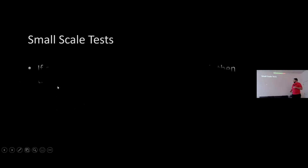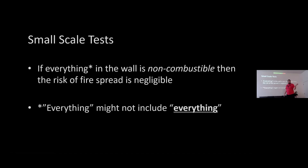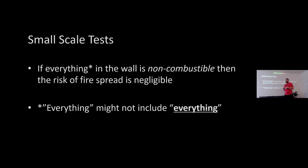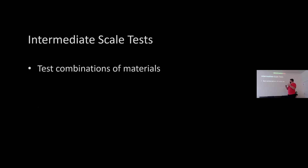When we look at the whole cladding system on small scale tests, if everything in the wall is non-combustible then it's probably not going to catch fire. The term 'everything' has quotes around it — certain things are exempt depending on how you read certain codes, which is where it starts to get gray. If you can prove everything in your wall is not going to burn, you're pretty much safe. If you do include something combustible, you need to go to the next step — the larger test — where you start looking at how combinations of materials work together: how you layer them to stop fire spreading, and whether two combustible materials combine to make a super-combustible material.